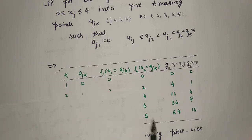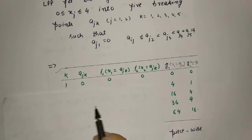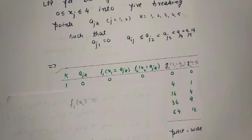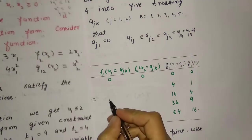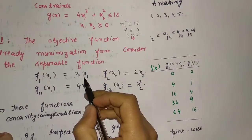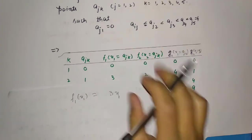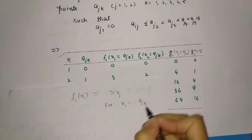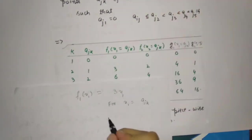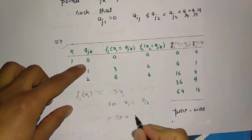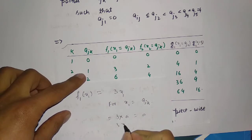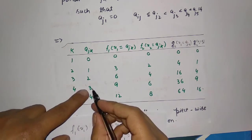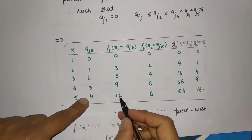Now I find f₁(x₁) from the table. Since f₁(x₁) = 3x₁ and substituting x₁ = a_jk, I get: 3×0 = 0, 3×1 = 3, 3×2 = 6, 3×3 = 9, and 3×4 = 12.